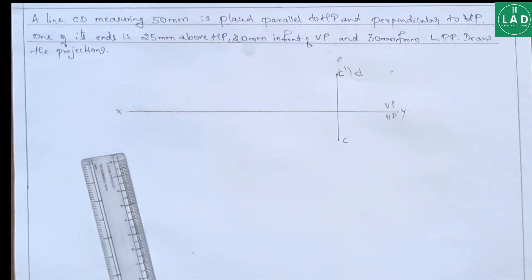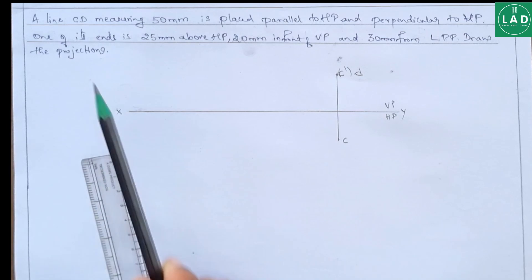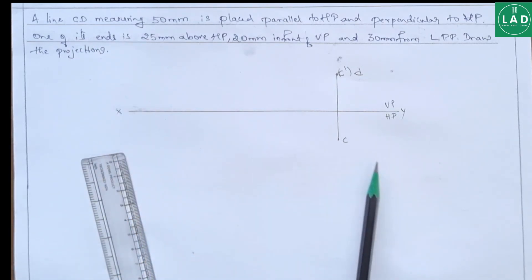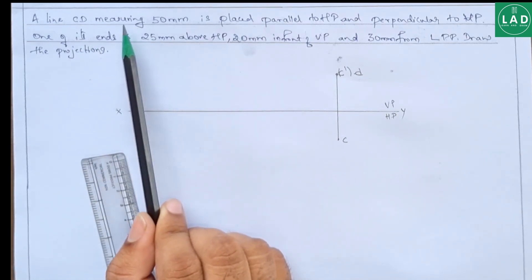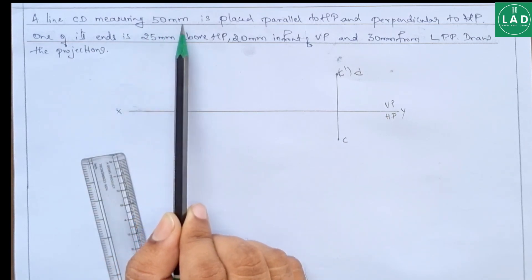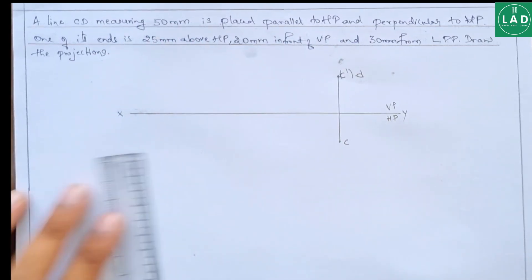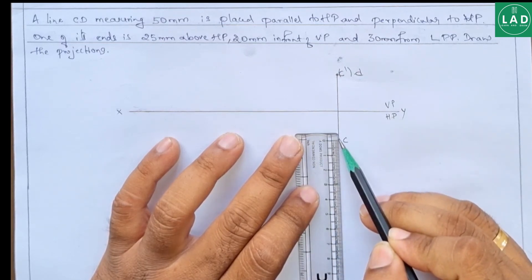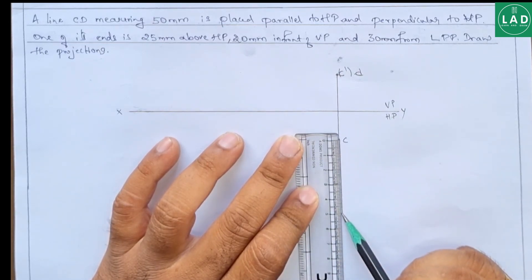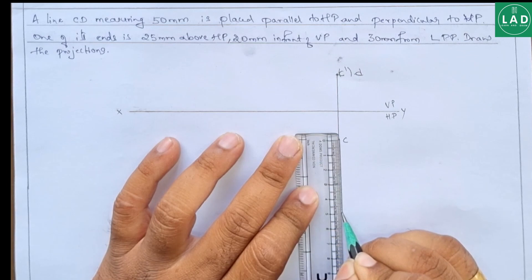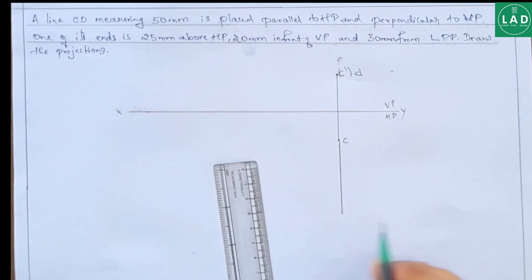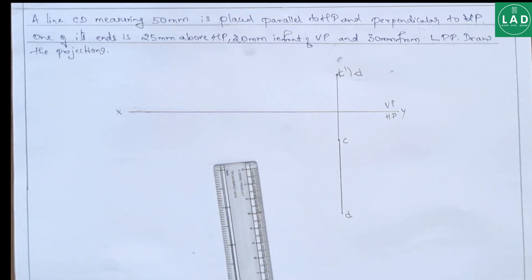Now, as we know, the true length of the line is seen in the top view. This is the top view — it is 50 mm parallel to HP. From this point, we draw a line that is 50 mm, and here we get another end. Let us name this as D.